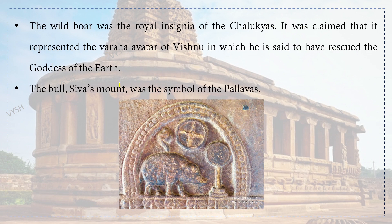The wild boar was the royal insignia of the Chalukyas. It was claimed to represent the Varaha avatar of Vishnu, in which he rescued the goddess of the earth. The bull, Shiva's mount, was the symbol of the Pallavas. So the wild boar is the sign of the Chalukyas and the bull is the symbol of the Pallavas.